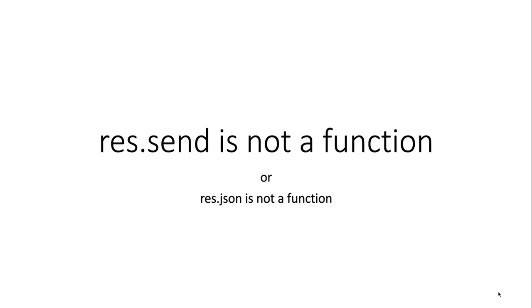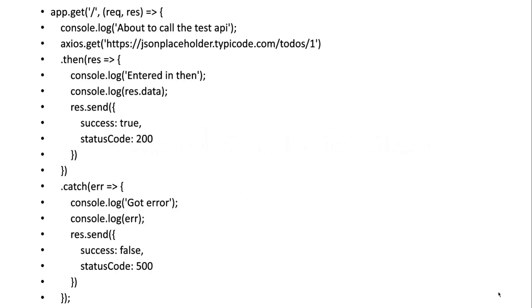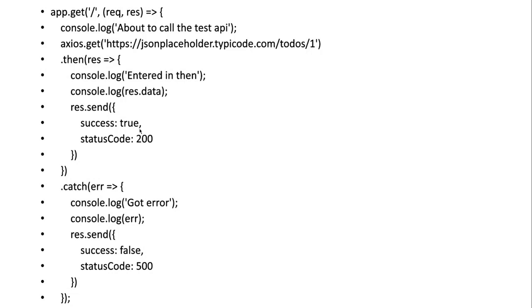Let me show you the code where we can get this error. Here in this code you can see app.get — this is the root URL, a GET method — and we are returning the response using res.send, returning the success and the success code.